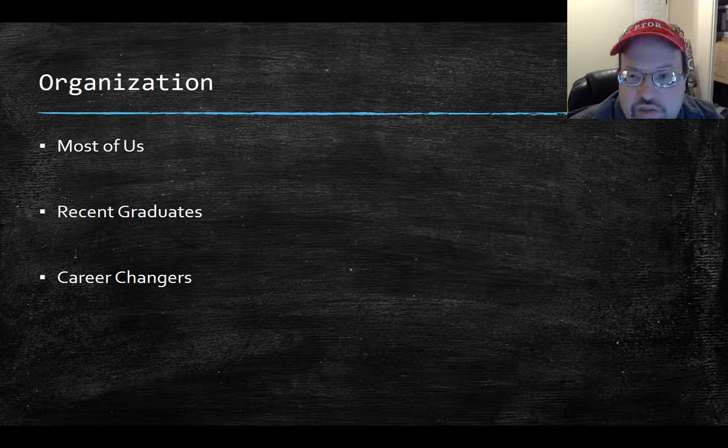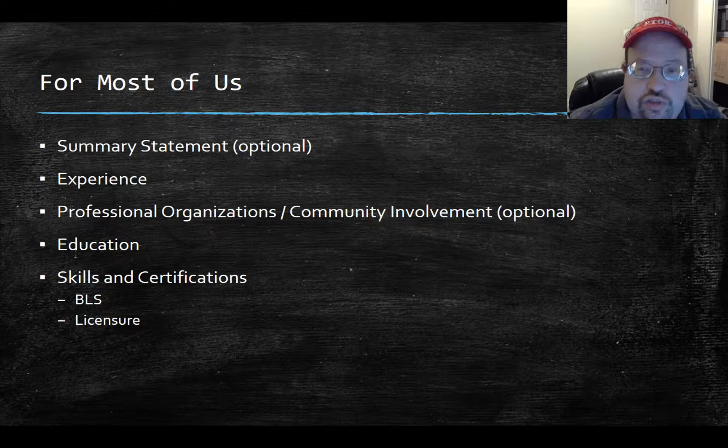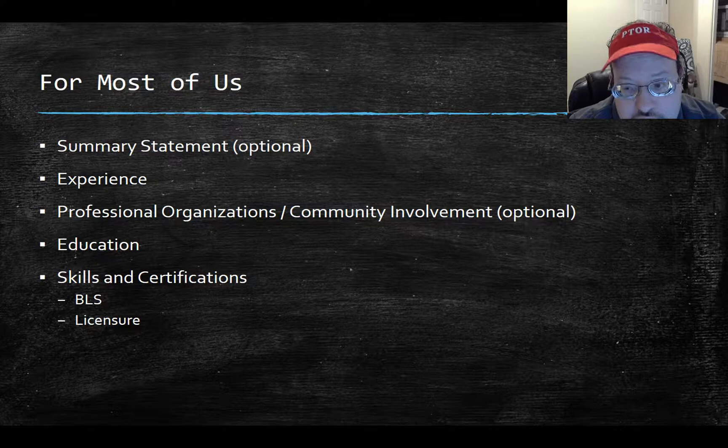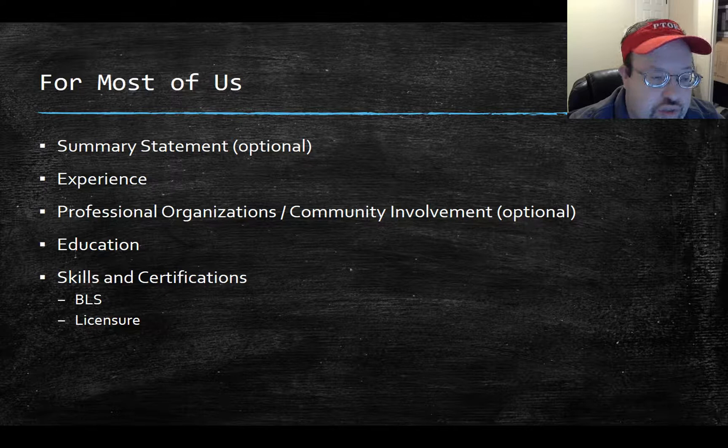We're going to be talking about organization. I'm going to break it down to most of us, which is the good majority of the class, then recent graduates, and then those who have career changes. Most of us will have a summary statement in the beginning — that's optional, also known as the objective. You're going to list your experiences, any professional organizations or community involvement. Community involvement is optional. Professional organizations can also include APTA.